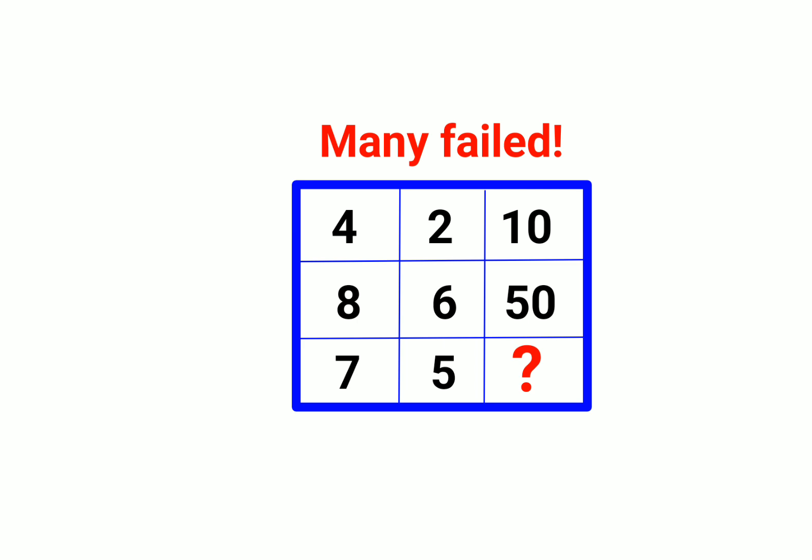If you see we have 4 and 2, so when you multiply 4 into 2 you get the answer as 8, plus 2 gets you this answer which is 10. Similarly, 8 into 6 will get you 48, plus 2 gets you 50. So this logic is sitting well for these two rows.